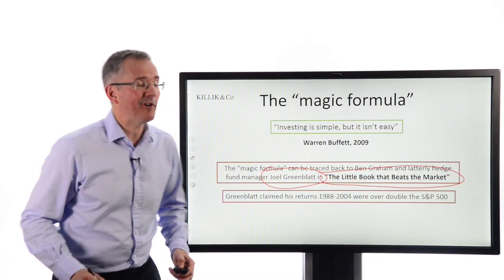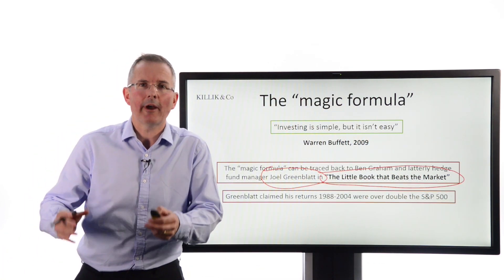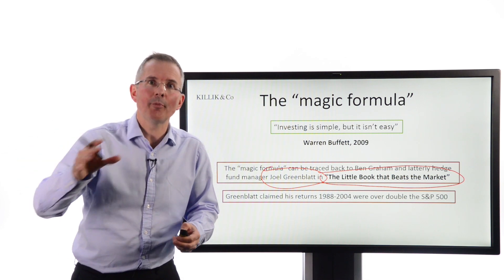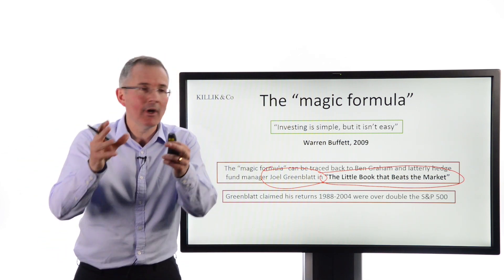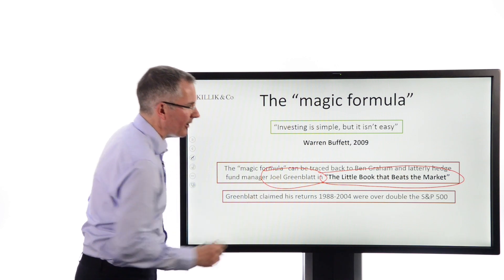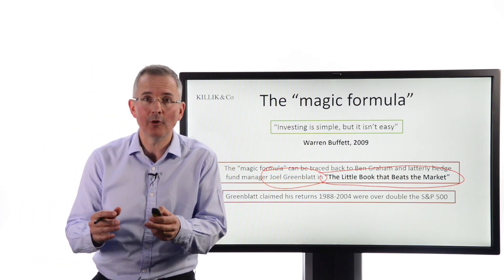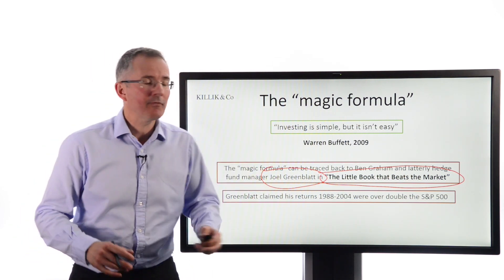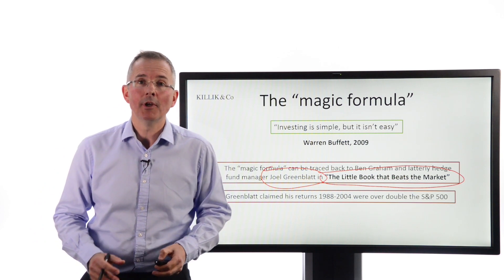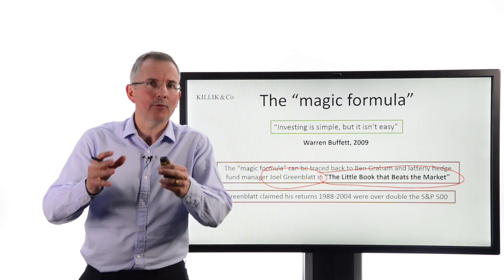The little book that beats the market. First published in 2005 and updated. The subsequent title was not surprisingly The little book that still beats the market. And he claimed some pretty spectacular returns from 1988 to 2004, just before the book was published. Returns were over double the S&P 500.